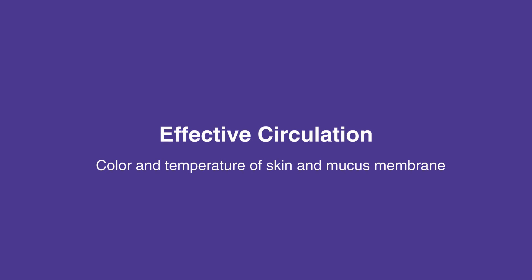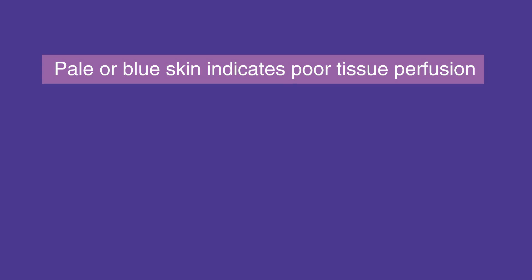Assessment of circulation in pediatrics involves more than checking the pulse and blood pressure. The color and temperature of the skin and mucous membranes can help to assess effective circulation. Pale or blue skin indicates poor tissue perfusion.